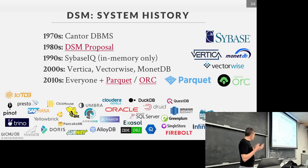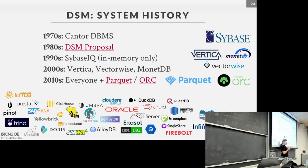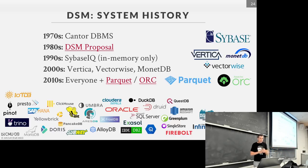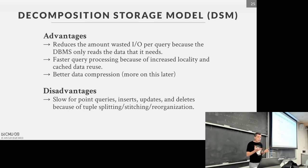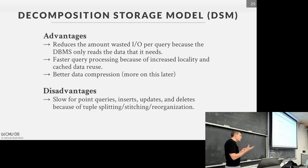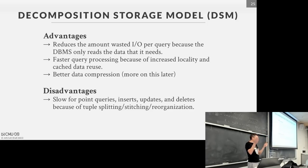There are many columnar database systems now. Open source file formats Parquet — from Dremio — and ORC — from Facebook — are columnar-based, and you can build database systems that use them. The benefits are: we're only reading the exact data we need; we get better cache reuse and locality because we're ripping through columns one after another without jumping around in memory; and we get better compression.